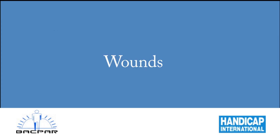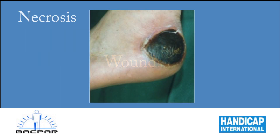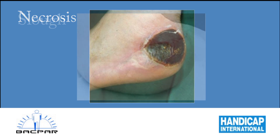Here are some types of wounds that you may come across. Necrosis is a layer of dry, hard, black eschar which can be of varying depth. It can be intact or demarcating at the edges of the wound. It must be removed before wound healing can take place.